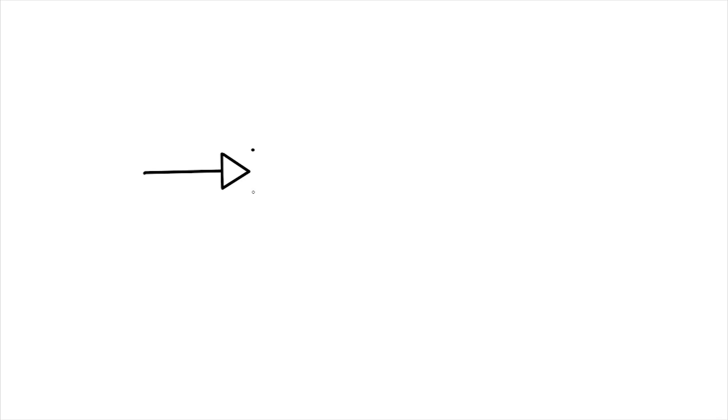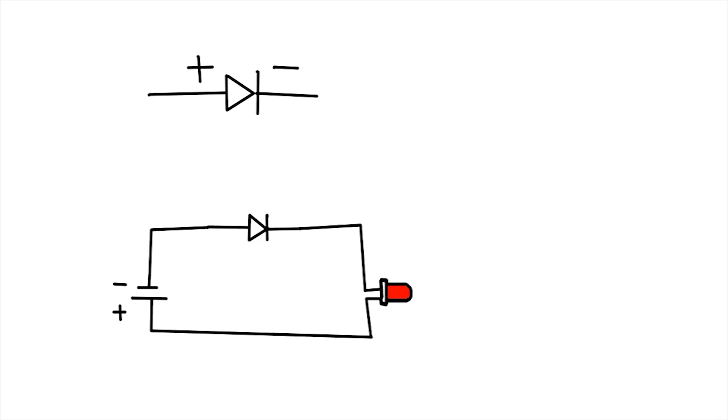This basically is the symbol for diode. This here is the positive and this will be the negative. Now if I have a circuit like this, my LED will glow. If I reverse the polarity, then my LED does not receive any voltage. Since my diode is reverse biased, basically forming an open connection like this which does not allow the current to flow through the LED.